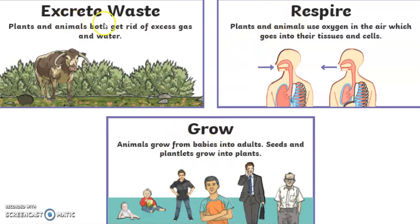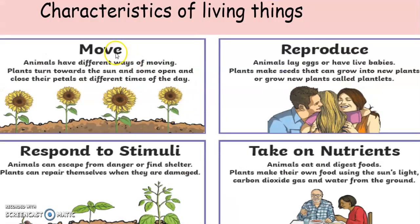Living things respire and excrete waste. Plants and animals will get rid of gases and water. This is advanced for you, but what I want you to know is to differentiate between living and non-living things.